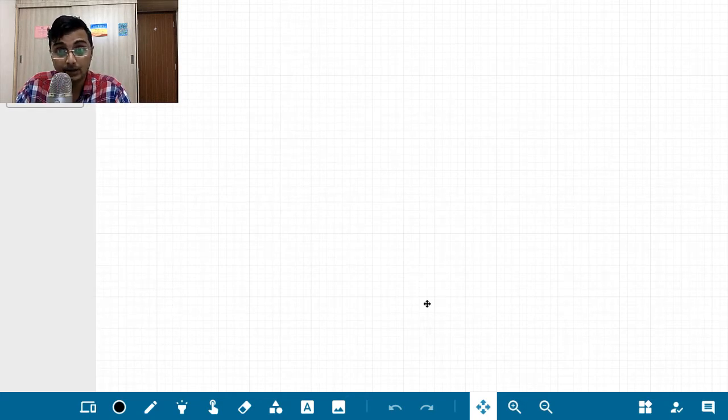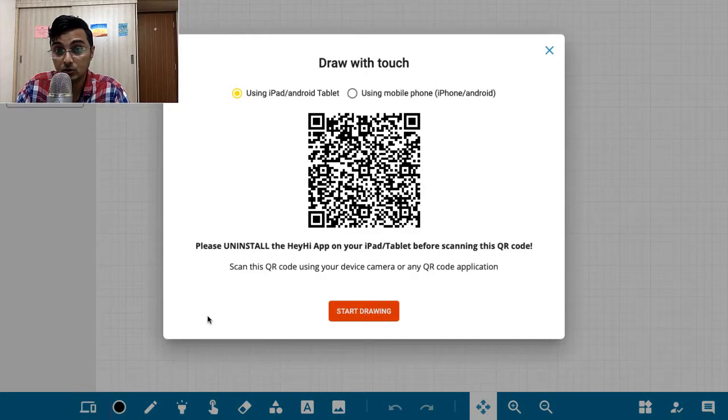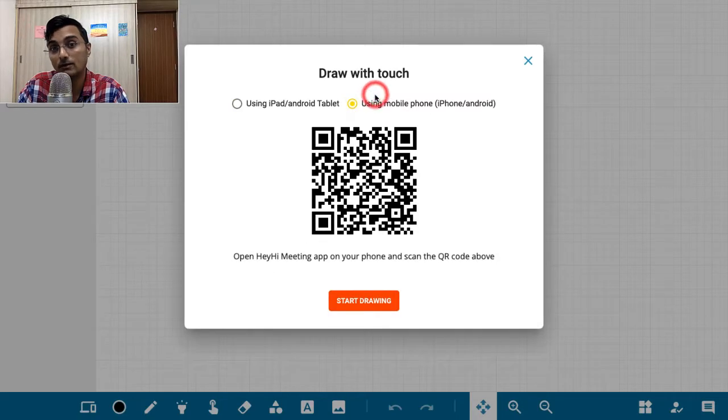Now to connect your mobile phone and your laptop, you'll find a draw with touch option on the bottom. Just click on it. A QR code scanner will open up, and here you need to use the mobile phone option.